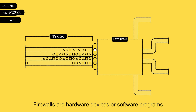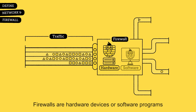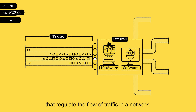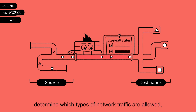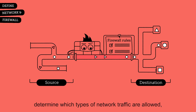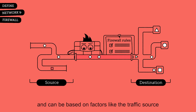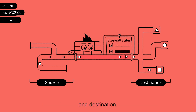Firewalls are hardware devices or software programs that regulate the flow of traffic in a network. Firewall rules or policies determine which types of network traffic are allowed and can be based on factors like the traffic source and destination.